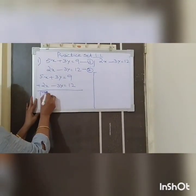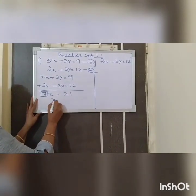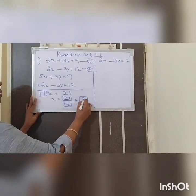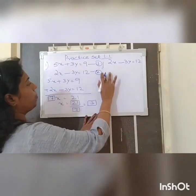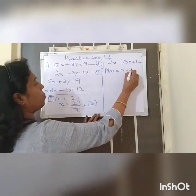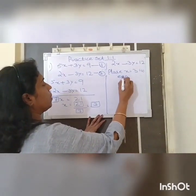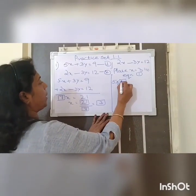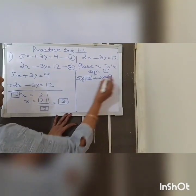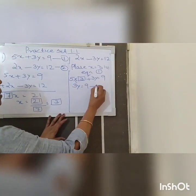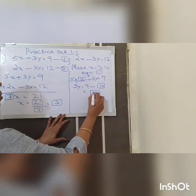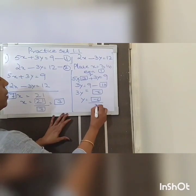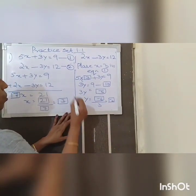Positive 3Y and negative 3Y are eliminated. Therefore, 5 plus 2 gives 7X equals 21, so X equals 21 divided by 7 equals 3. Substituting X equals 3 in equation 1: 5 times 3 plus 3Y equals 9, so 15 plus 3Y equals 9, giving 3Y equals 9 minus 15 equals negative 6. Therefore Y equals negative 6 divided by 3 equals negative 2. Therefore the solution is X equals 3 and Y equals negative 2.